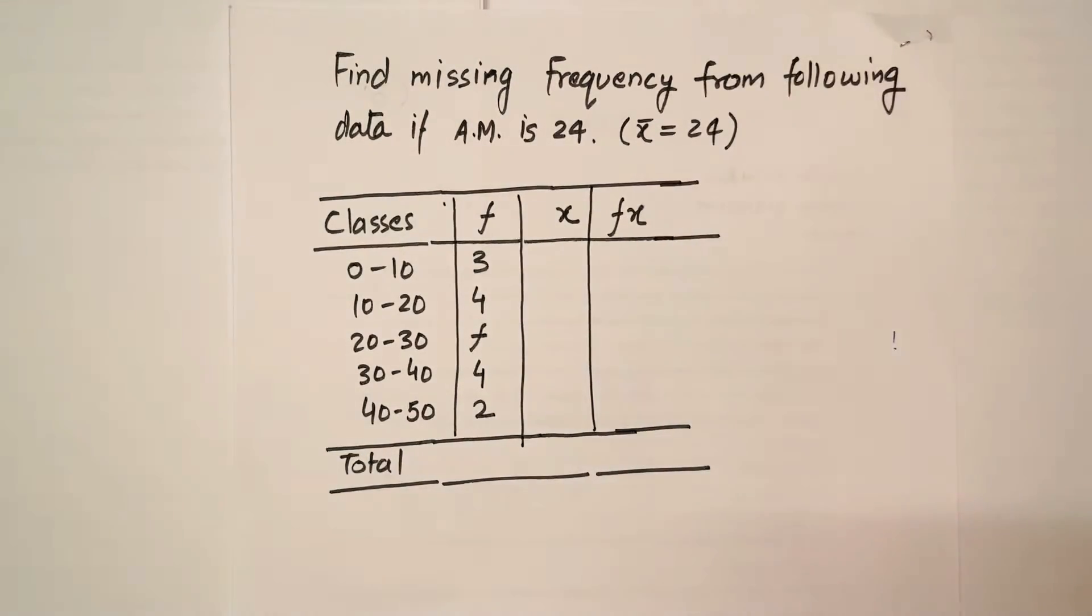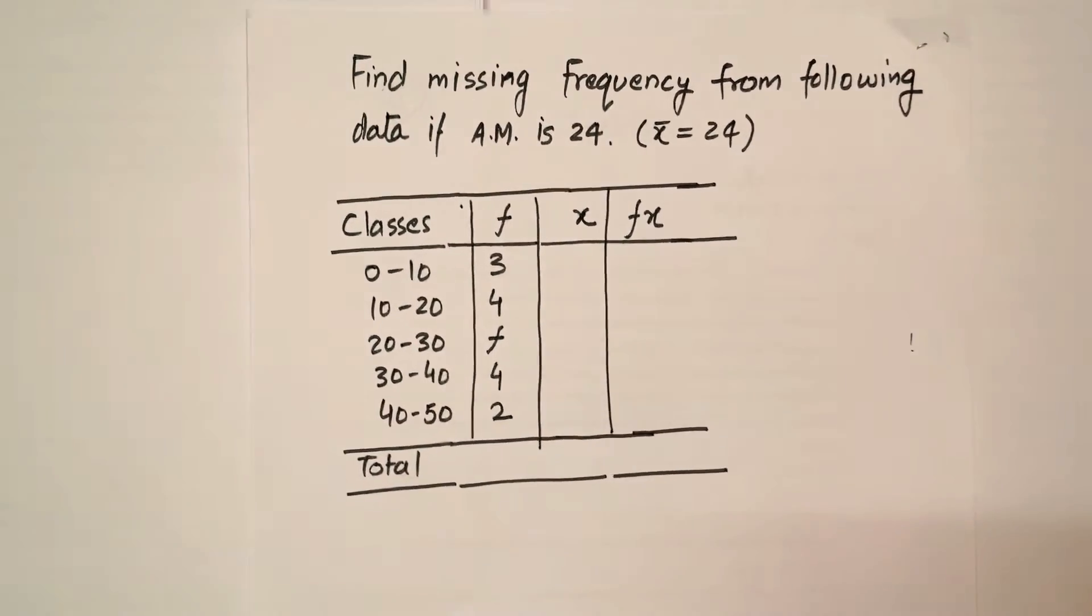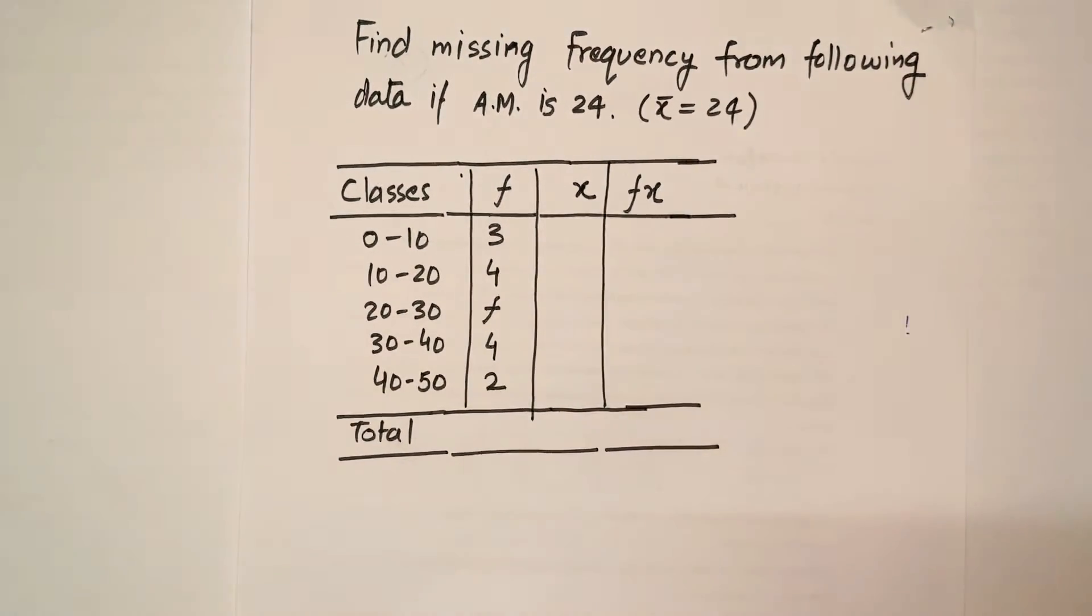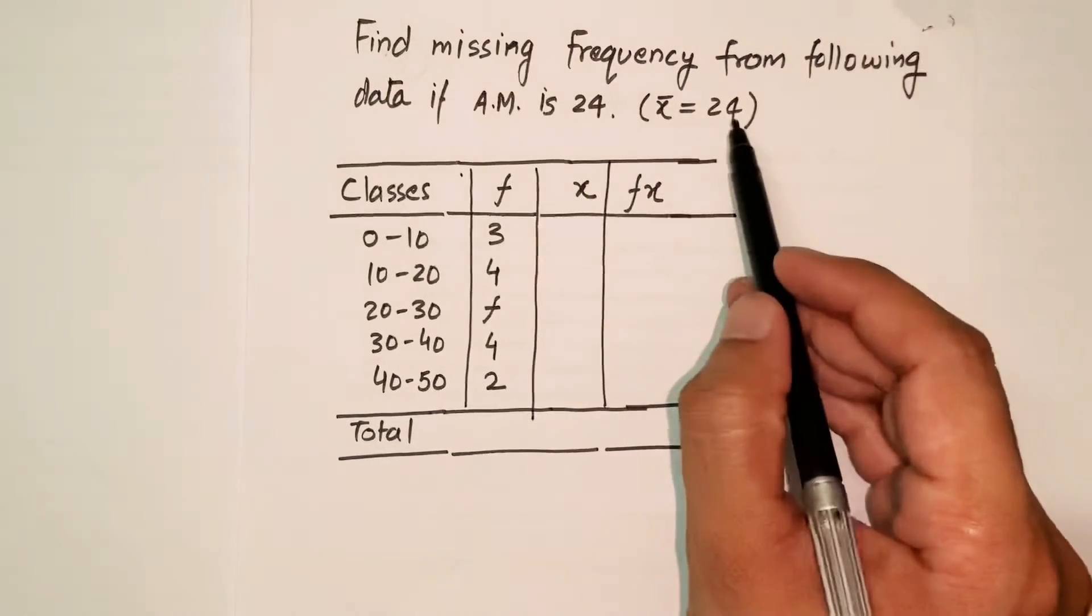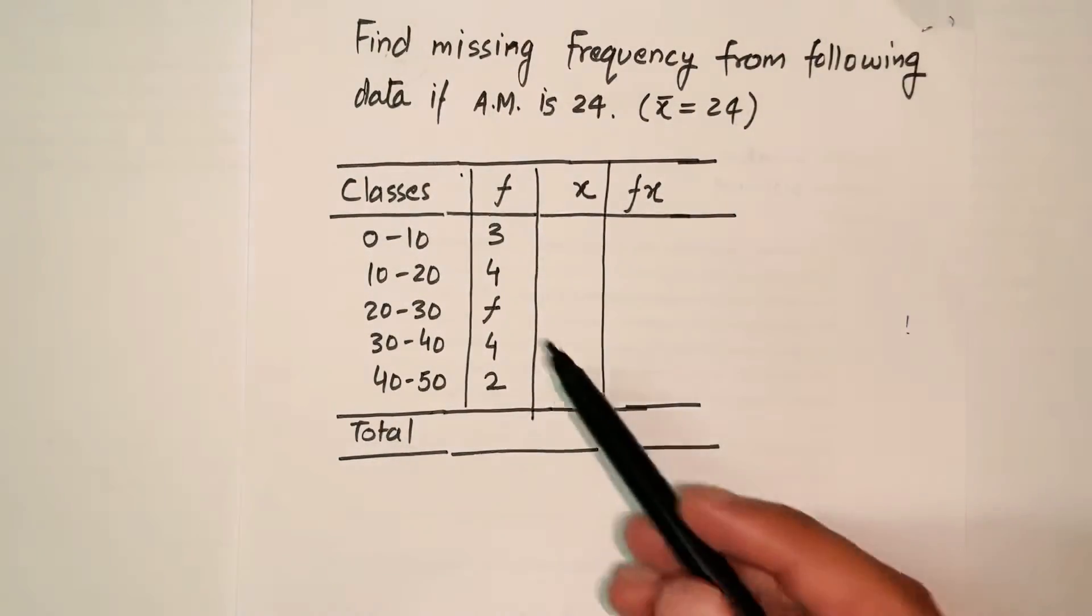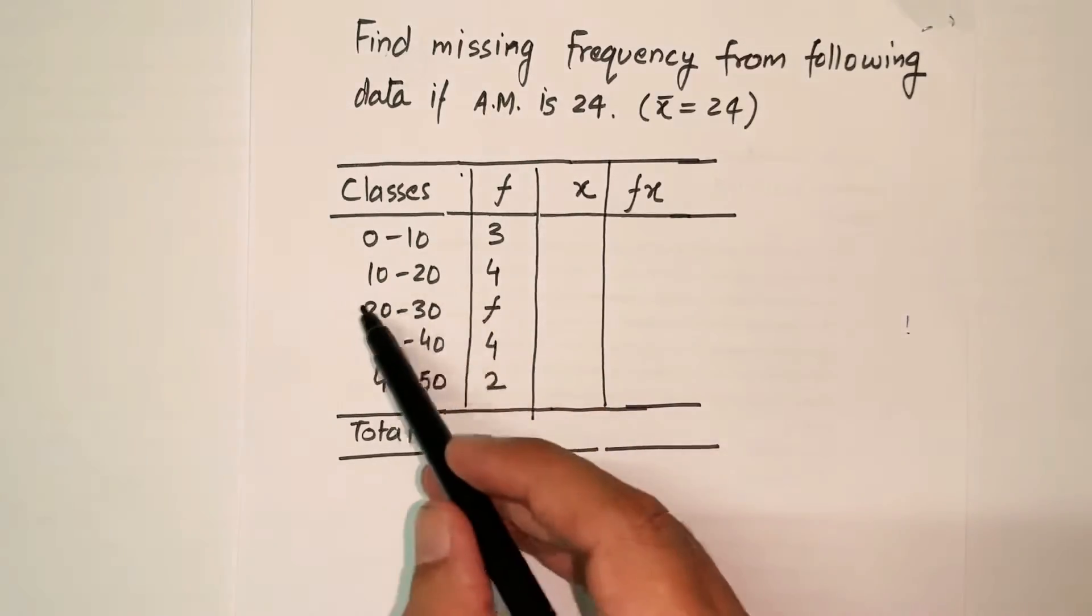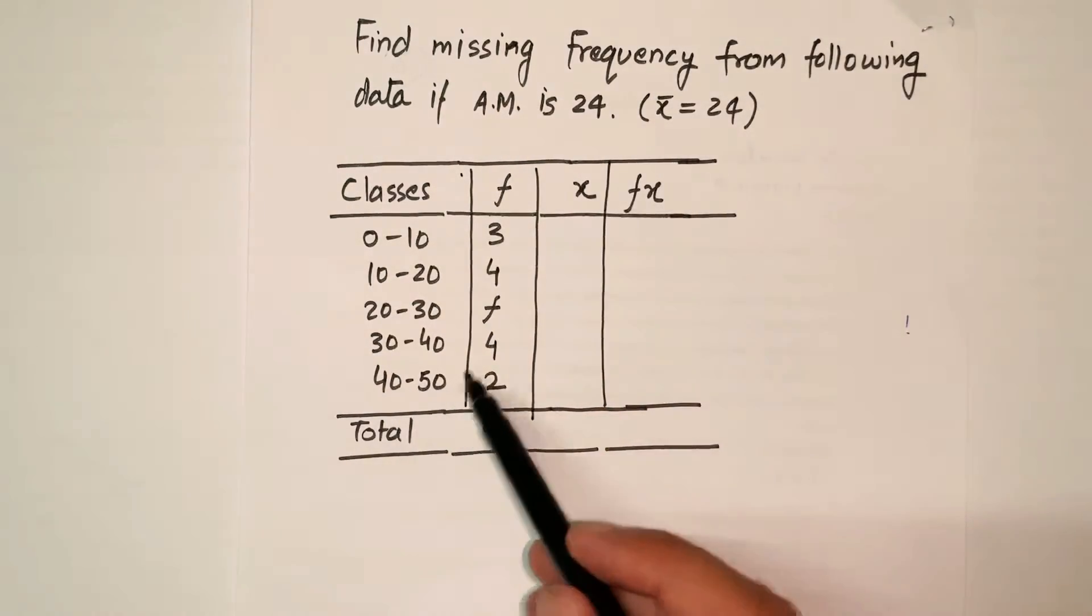This is the problem: find missing frequency from the following data if arithmetic mean is 24. This is the data which has been given: there are classes 0 to 10, 10 to 20, 20 to 30, 30 to 40, 40 to 50.